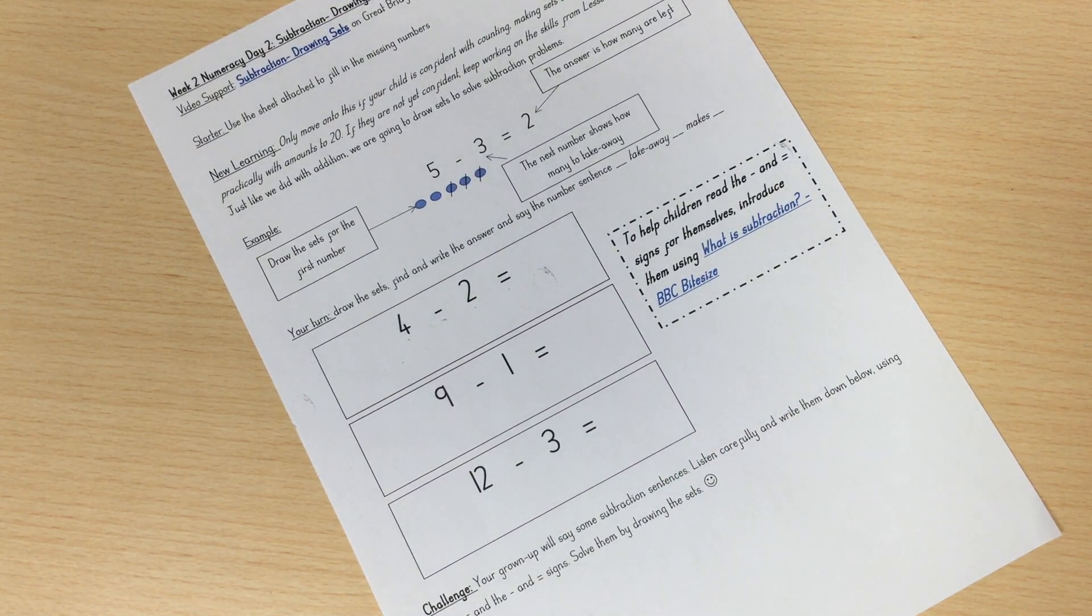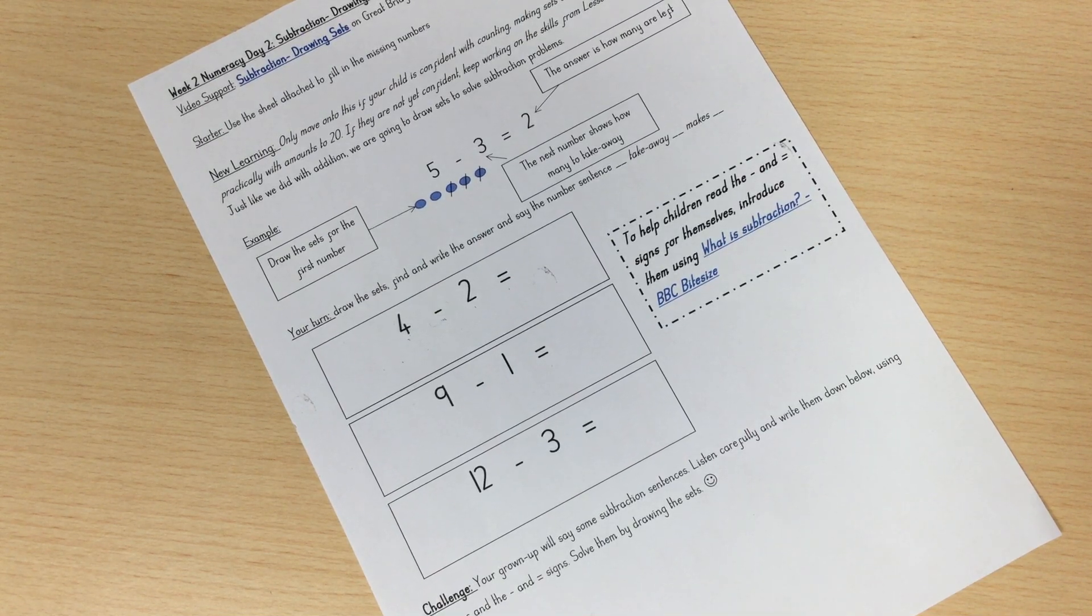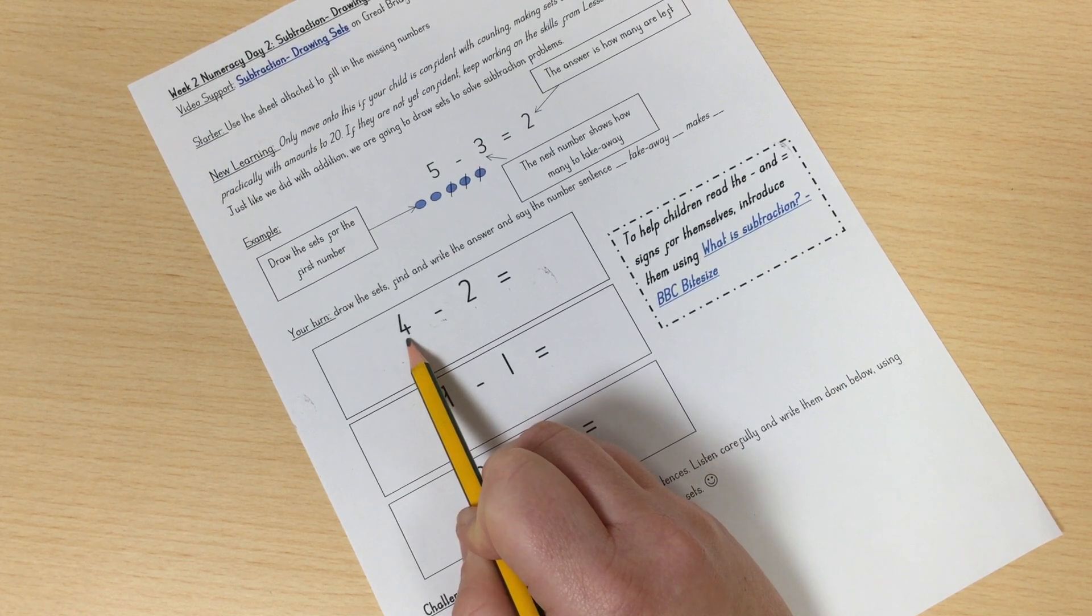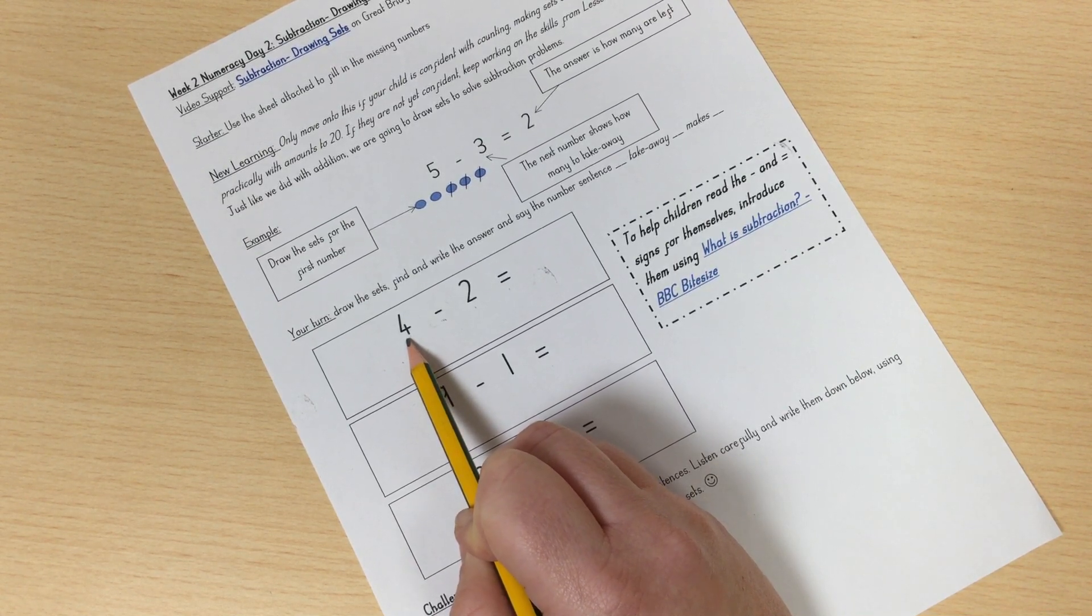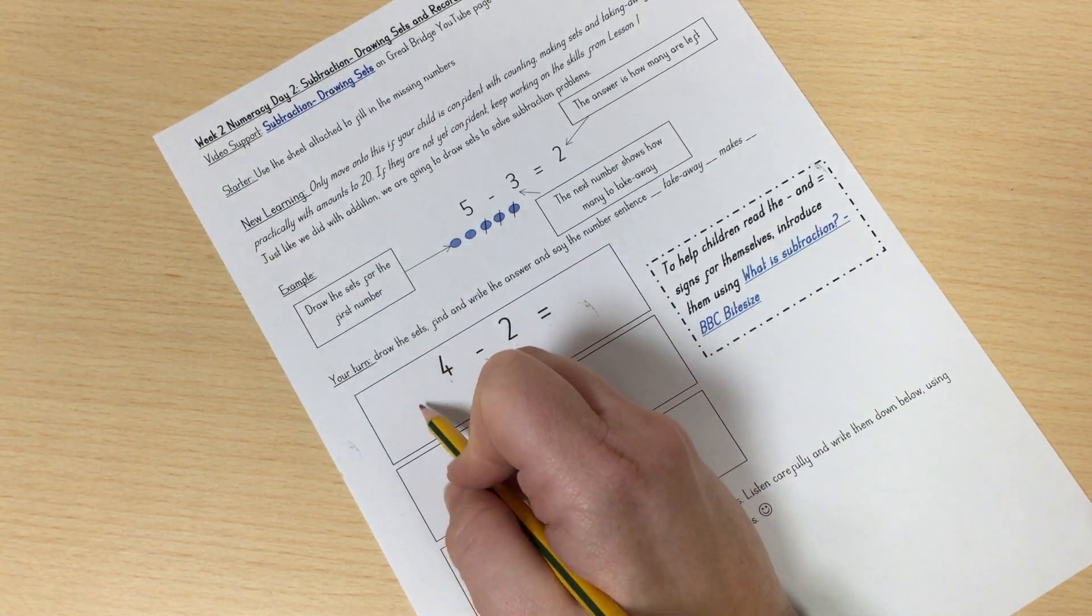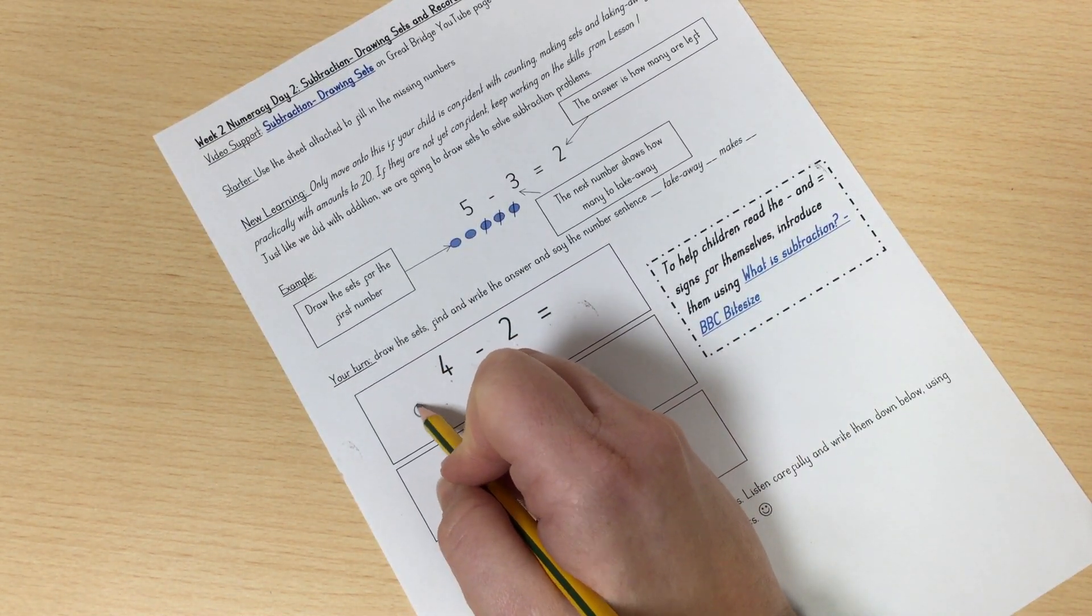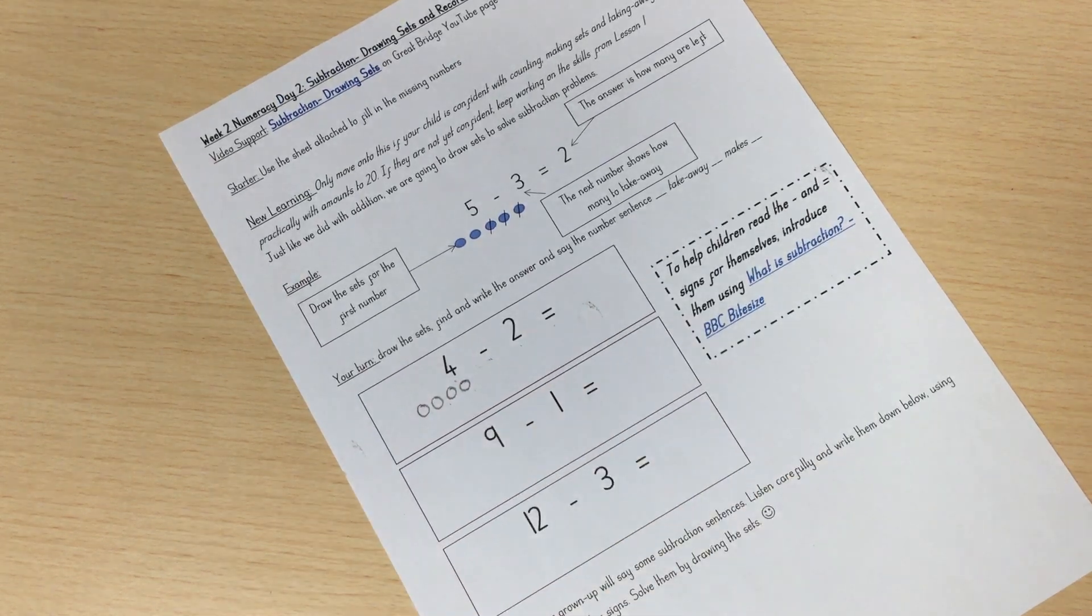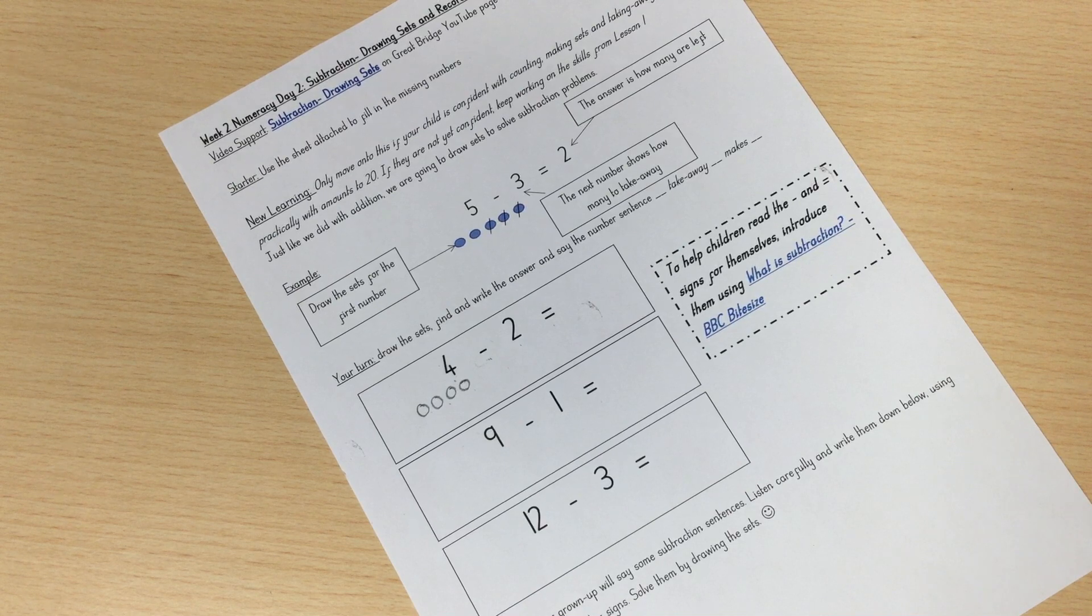So I'm going to draw my set. How many do I need to start with? Yes, my first number always tells me how many to start with. So I need to start with four. Let me draw and count. One, two, three, four. Stop at that number. Four.